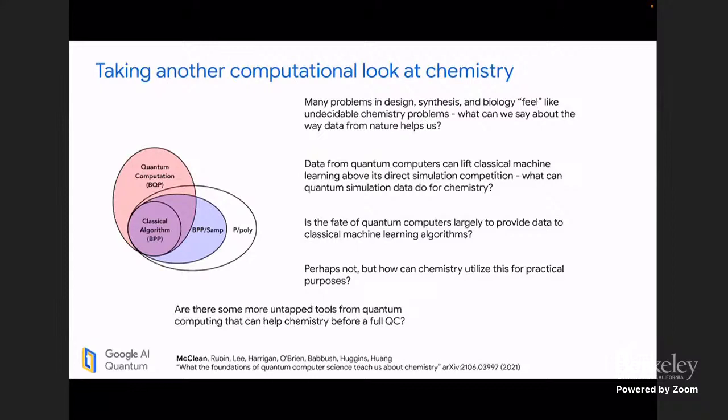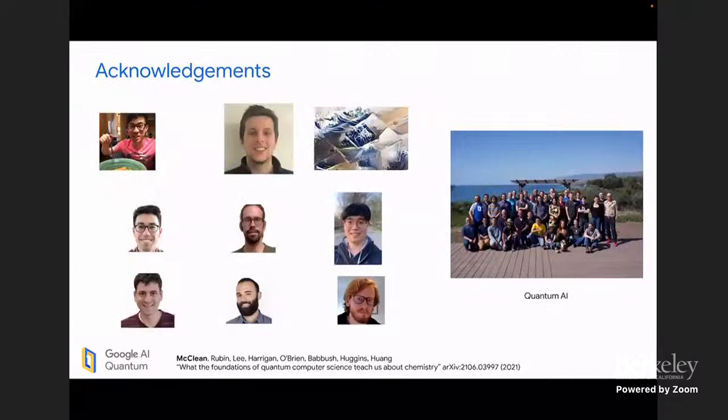Data from quantum computers can lift classical machine learning above its direct simulation competition. What can quantum simulation data actually do for chemistry? How can we start to use this knowledge to better plan for the future? Is the fate of quantum computers largely to provide data? I certainly hope not. But how do we start to look towards sensors in the future where this can be true? And are there any untapped tools from quantum computing that can help chemistry before a full quantum computer? And so maybe you'd like at least one tagline before we end, which is to say that we had this bold question, what the foundations of quantum computer science teach us about chemistry. And I was referring largely to these recent results that say that data is more powerful than we think it is. And I think what we can learn from quantum computers is hopefully how to access the natural world in an even more important and aggressive way. With that, I'd just like to thank all of the collaborators who were involved in this work, those who were brave enough to be on this paper where we did some wild speculation. And I hope that you at least found the discussion a bit fun and engaging, even if you disagree with some of the points that I've made. And I'd like to thank you all for listening. Thanks.